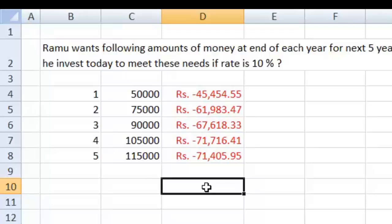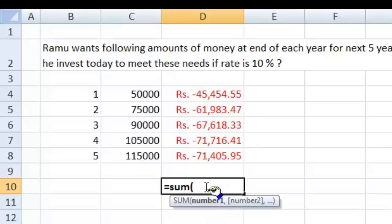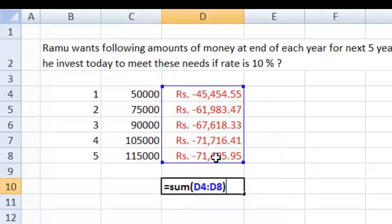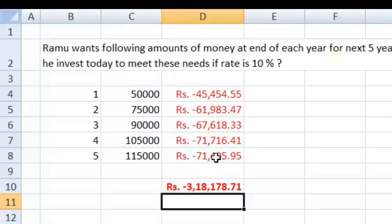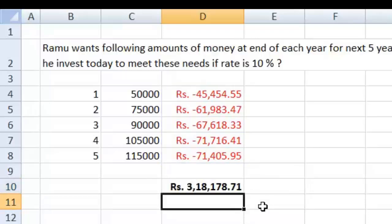Now in order to get our answer, let's sum it up because you require each of these amounts individually to get these future values. So when we sum it up, we choose these numbers and enter. Now let's just put a negative sign here before sum so that the answer comes in as a positive value.